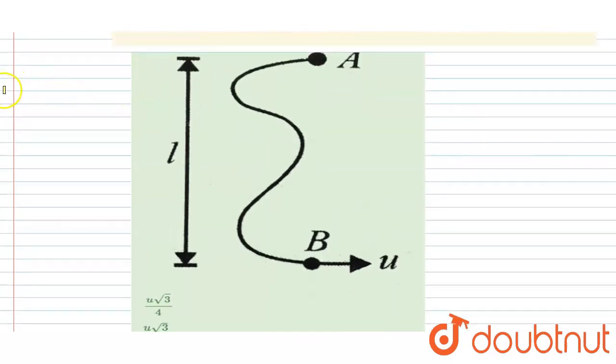So if you see here, these are the particles, and when the string will become taut like this, the particle will be placed here and the string will be like this.